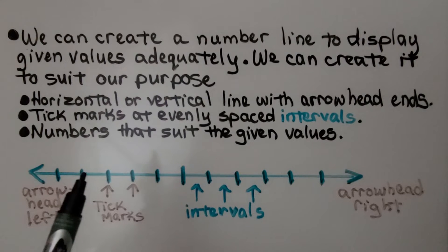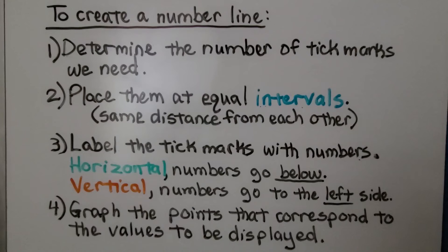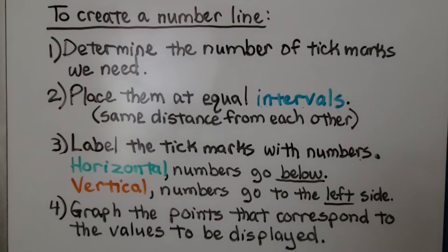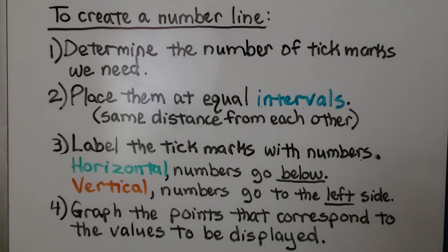So each of these lines is a tick mark. To create a number line, the first thing we do is determine the number of tick marks we need. Then we place them at equal intervals, the same distance from each other. Then we label the tick marks with numbers.